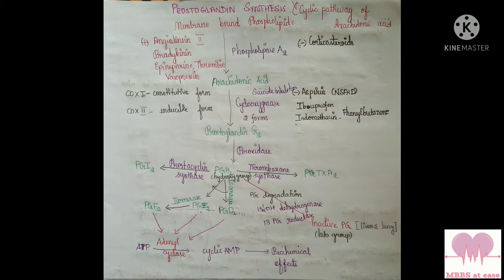Prostaglandin G2, on action of glutathione-dependent peroxidase enzyme, gives prostaglandin H2. PGG2 and PGH2 are intermediates in the synthesis of other prostaglandins. Prostaglandin H2 on reaction with prostacyclin synthase gives prostacyclins, and on action of thromboxane synthase gives thromboxanes.